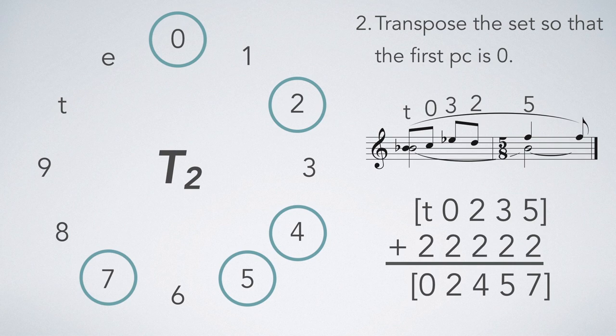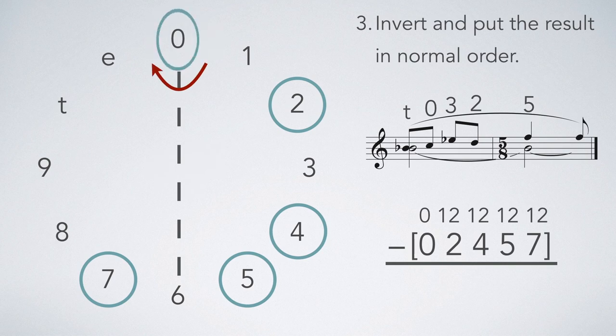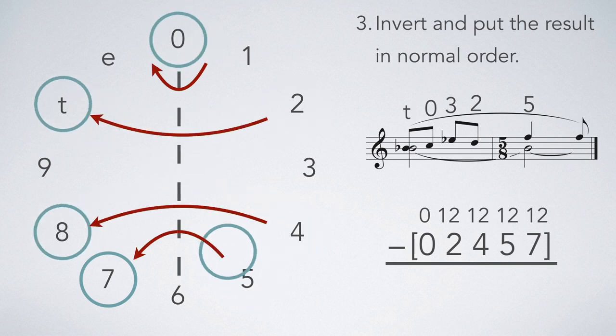Sometimes the inversion of a set yields the more compact ordering. So now we must invert the set to find out if that is the case. When we invert at T0I, we get the set 0, 10, 8, 7, 5.